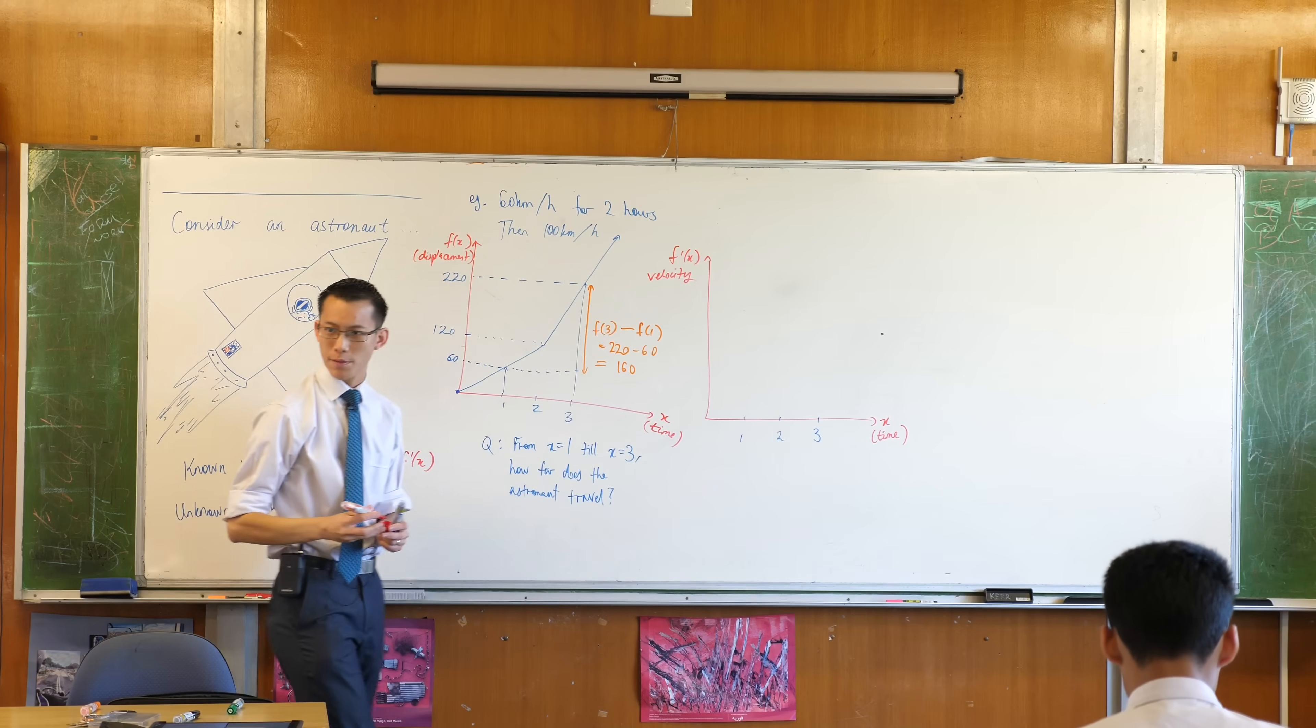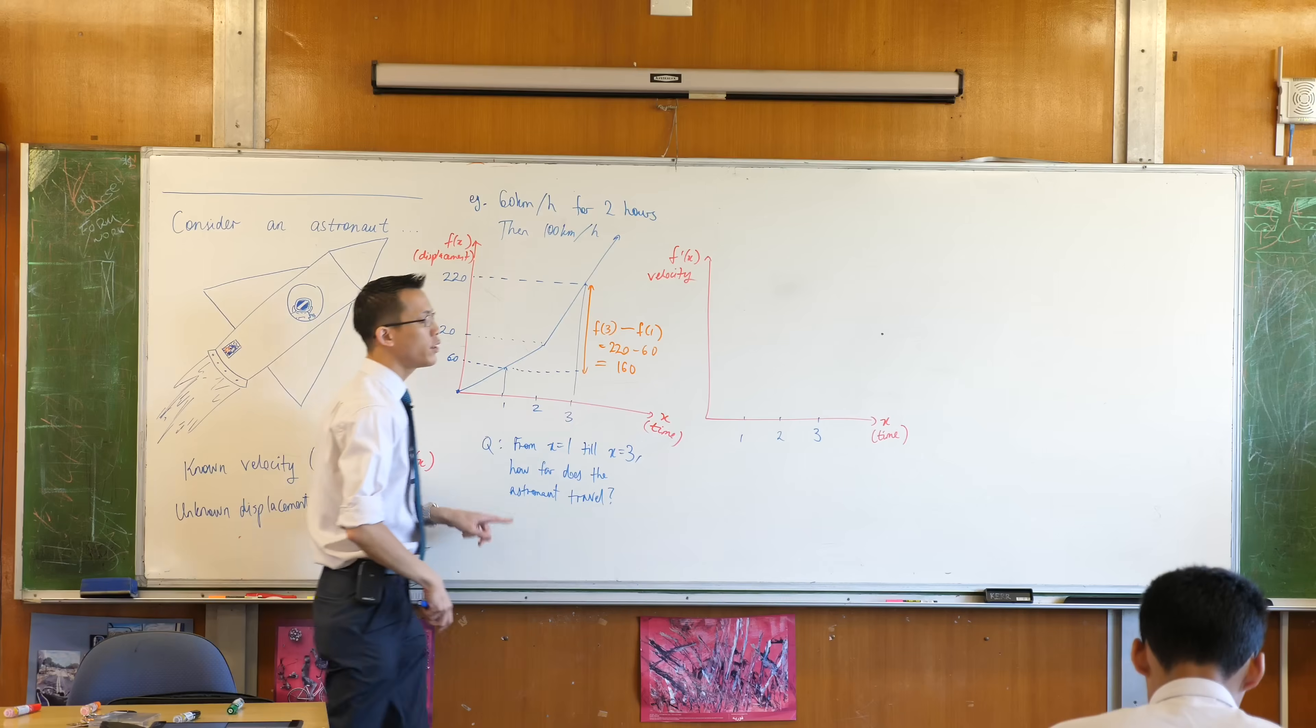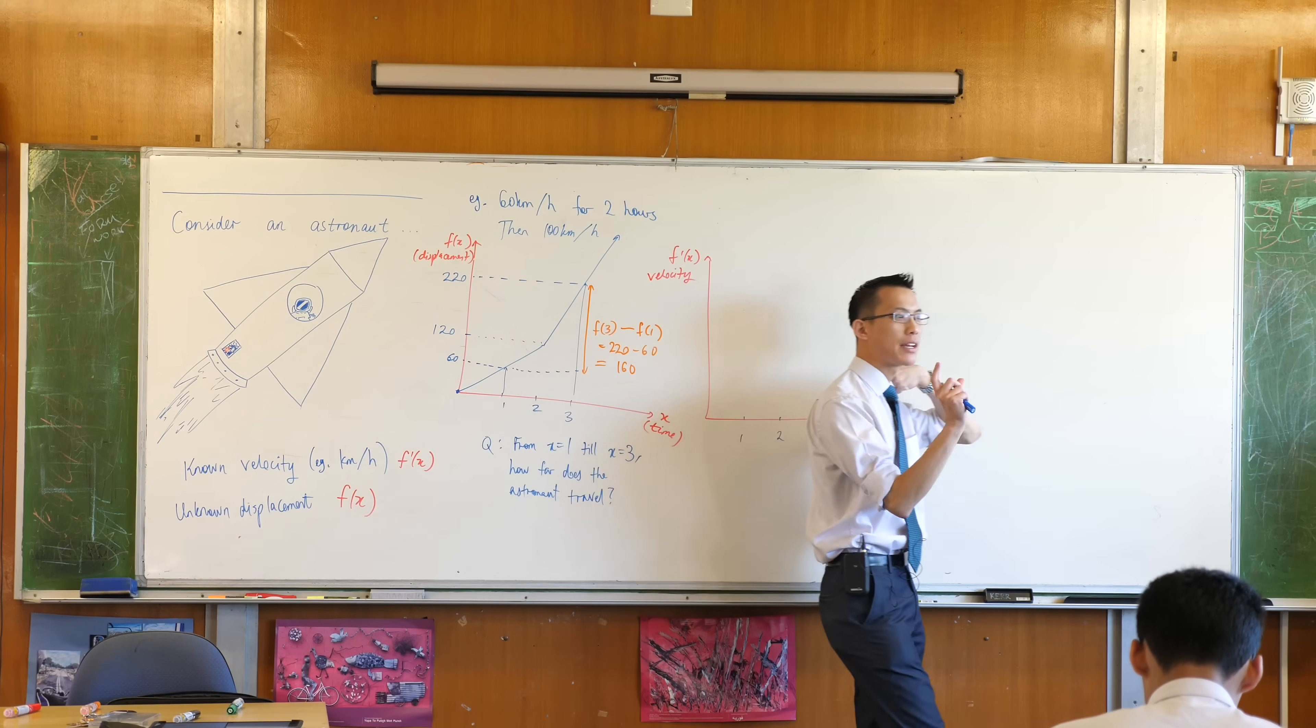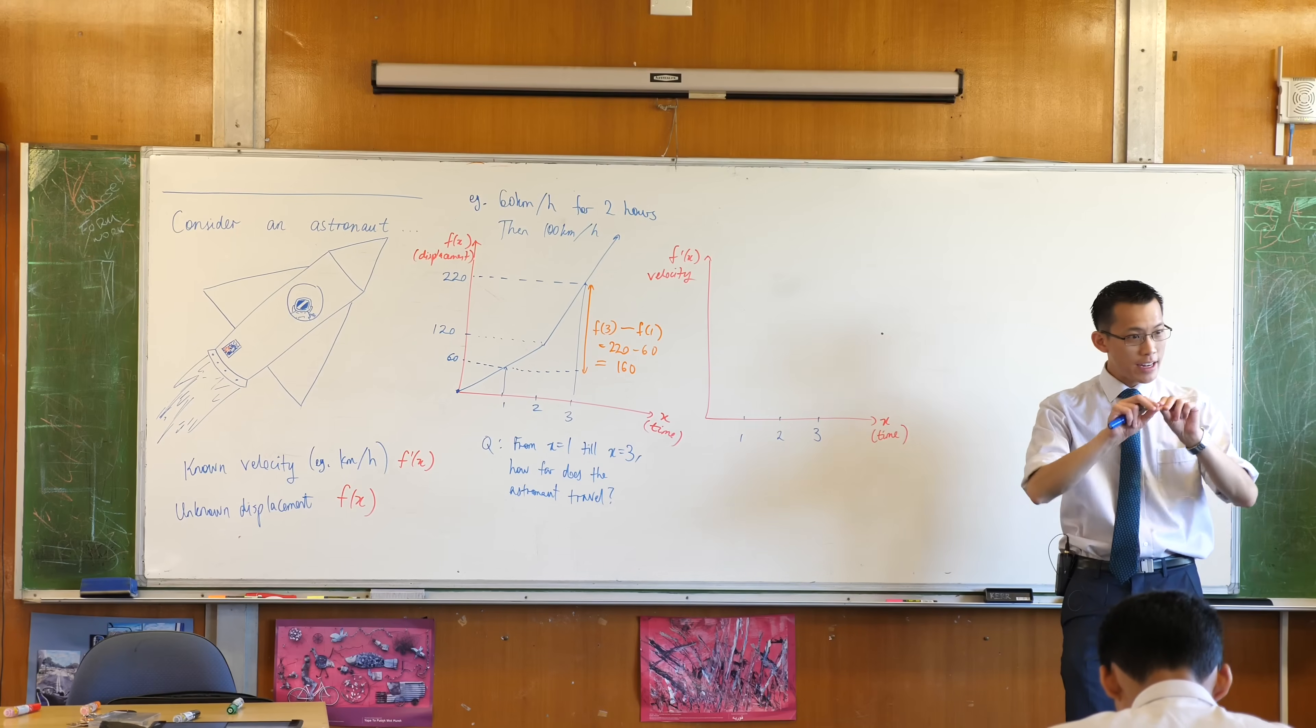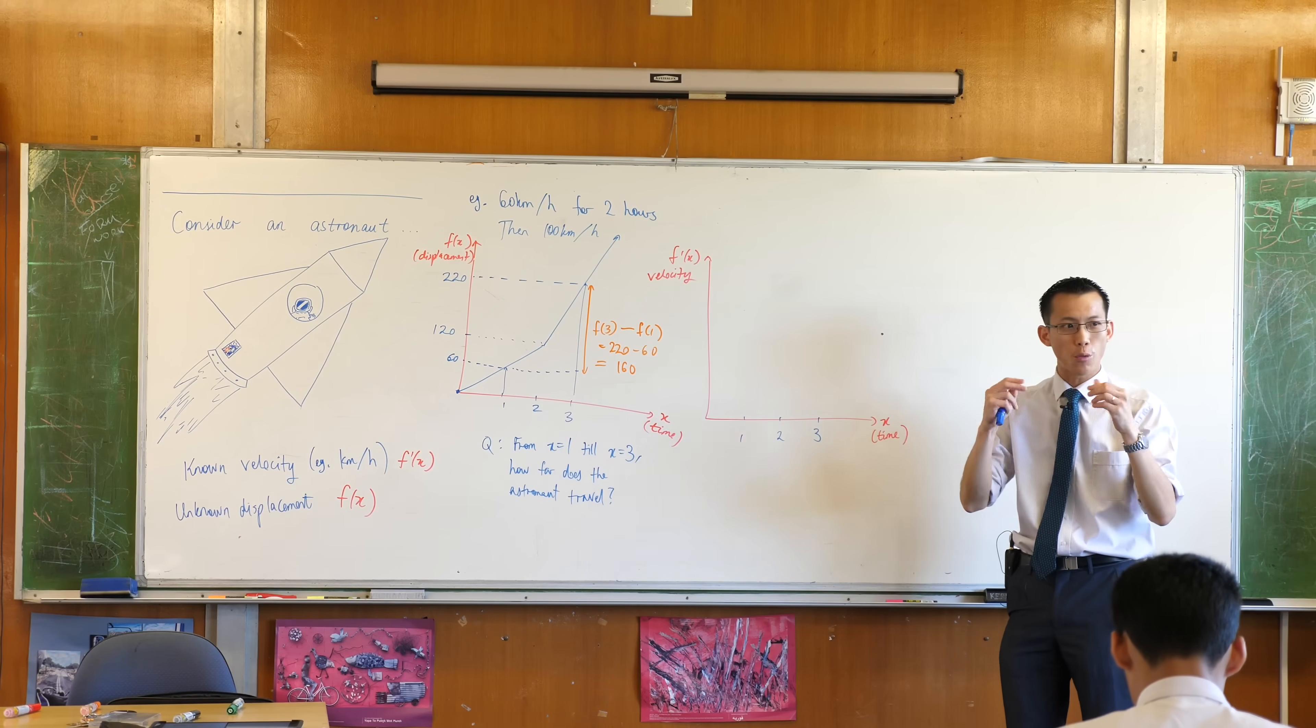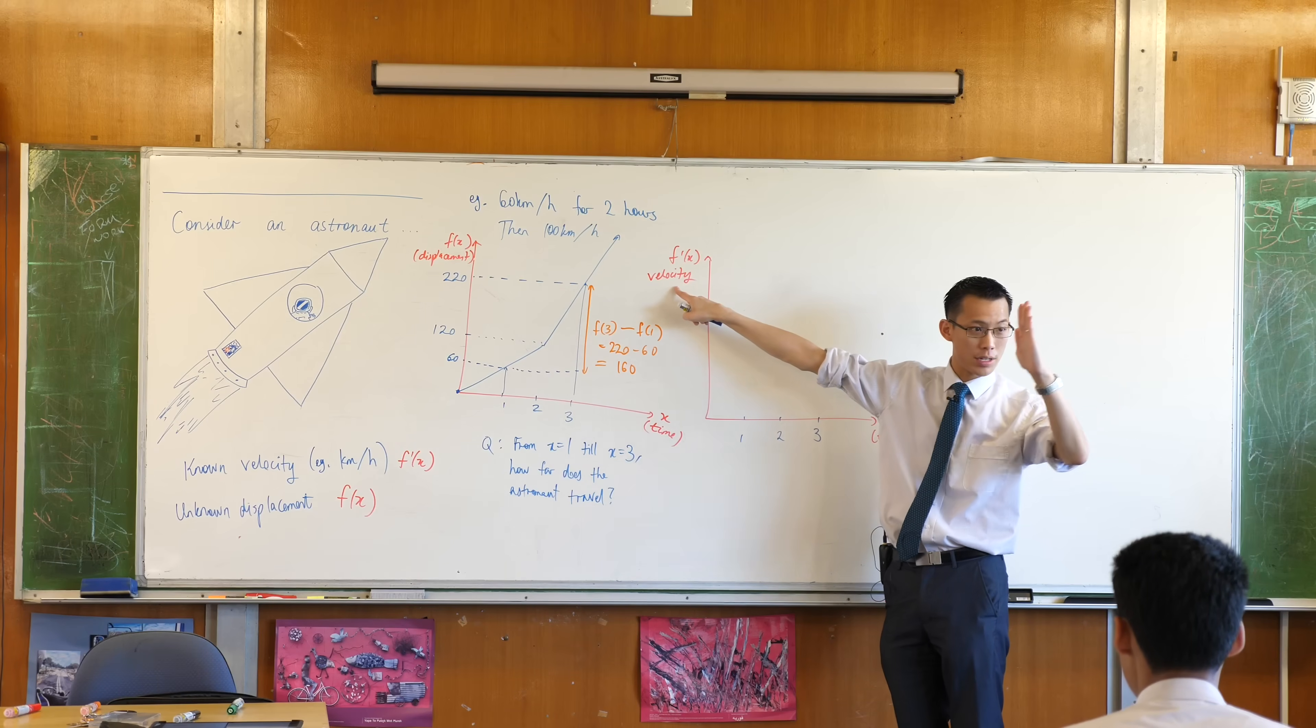You guys have seen this before - you've been able to graph f' from f. What would it look like in this case? What's happening for the first two hours? It's straight, right? But watch out, it's straight at what value? What is the velocity from time zero to time two?